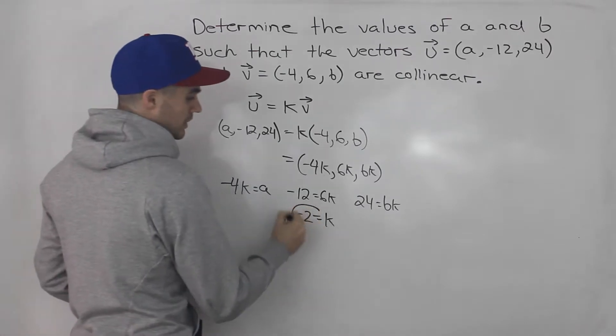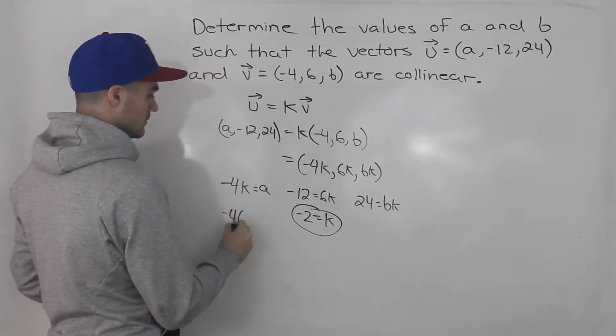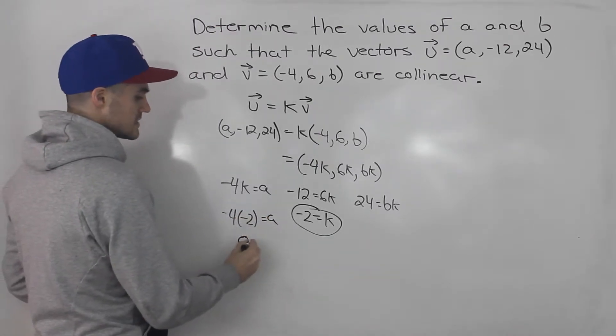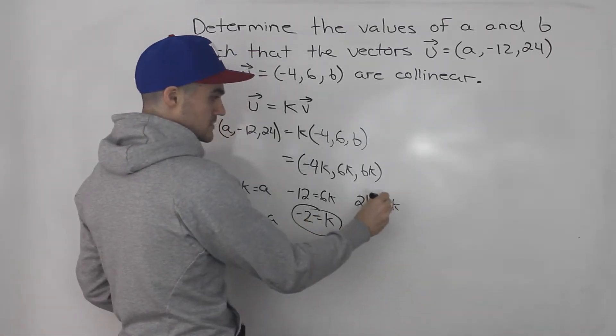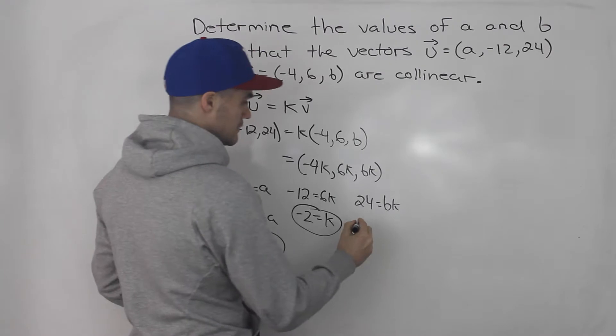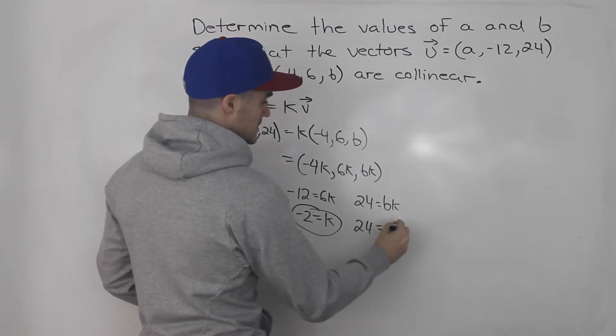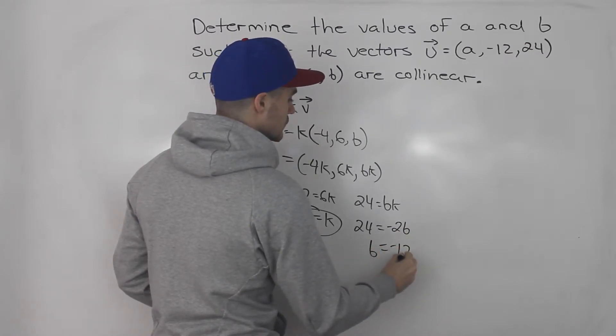And now notice how we can plug in this K value of -2 here. So -4 times -2 would give us the A value, which is 8. And then we could plug in this K value -2 into here, and then solve for that B value. So 24 equals -2 times B is -2B. Divide both sides by -2, so B would be -12.